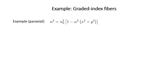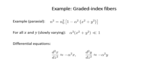The next example is an optical fiber whose refractive index varies as n₀² times (1 − α²(x² + y²)). We assume that α²(x² + y²) ≪ 1, and similar to the previous example we simplify and find the following equations. Here we have two differential equations, while in the previous example we had only one, because in that case the refractive index was only a function of y, but here it depends on x as well as y. The solutions of these differential equations are harmonic functions with period 2π/α.